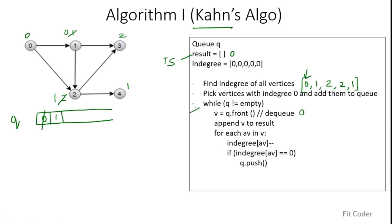We again enter the while loop. We pop the front of the queue, which is 1, and append it to the result. The adjacent vertices of 1 are 2 and 3. We decrement the indegree of 3 — it is now 1, not 0, so we leave it. Then we decrement the indegree of 2 — it is now 0, so we push 2 into the queue.